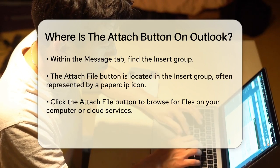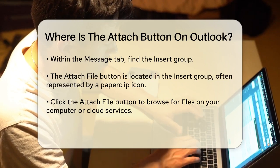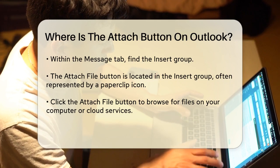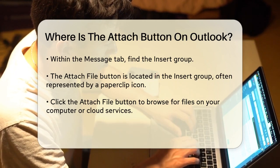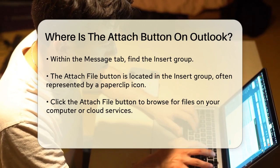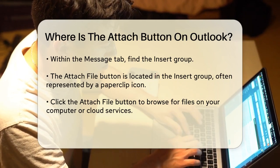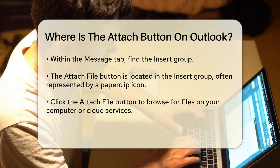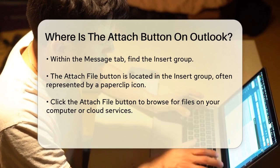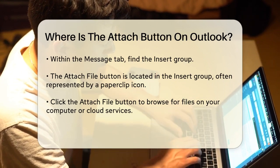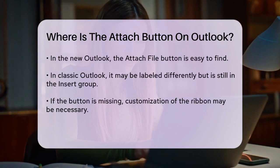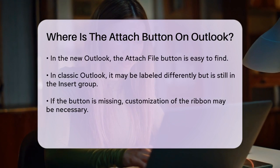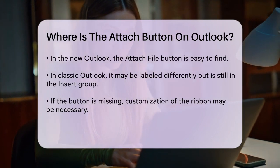If you're using the new Outlook, the Attach File button is straightforward to find. However, if you're using the classic Outlook, the button is still in the Insert group, but it might be labeled slightly differently as Attach File within the Include group.